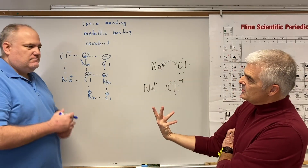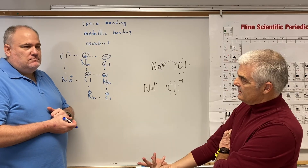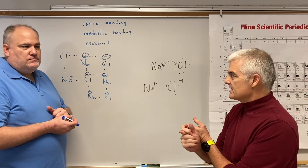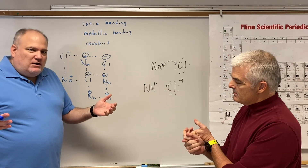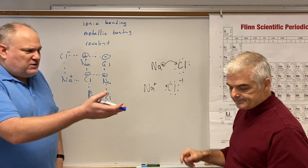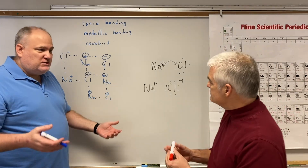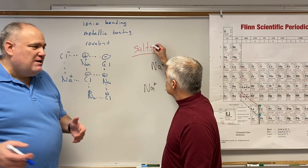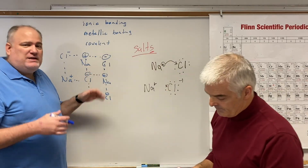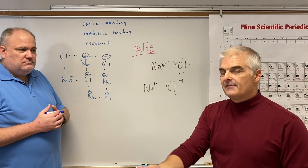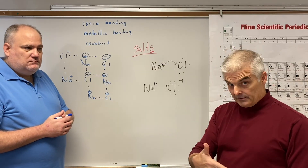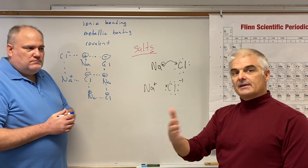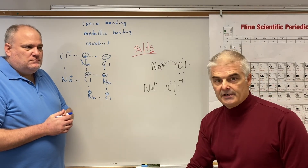Ionic compounds have an interesting name — we generically call them salts. Every single ionic compound is a salt. So magnesium phosphate — a metal magnesium bonded to the polyion phosphate — that is called a salt.